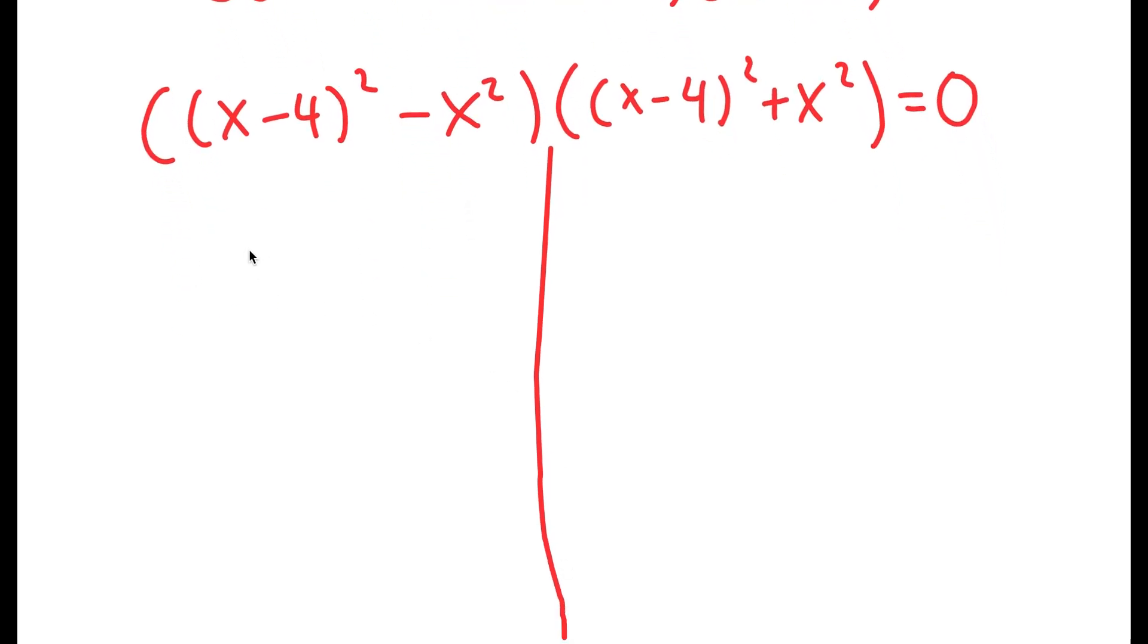And I can divide this up into two equations. I get x squared minus 8x plus 16 minus x squared is equal to 0, and x squared minus 8x plus 16 plus x squared is equal to 0.